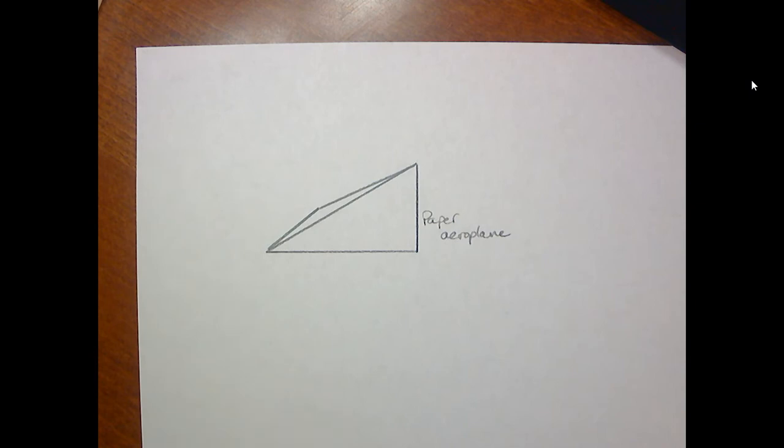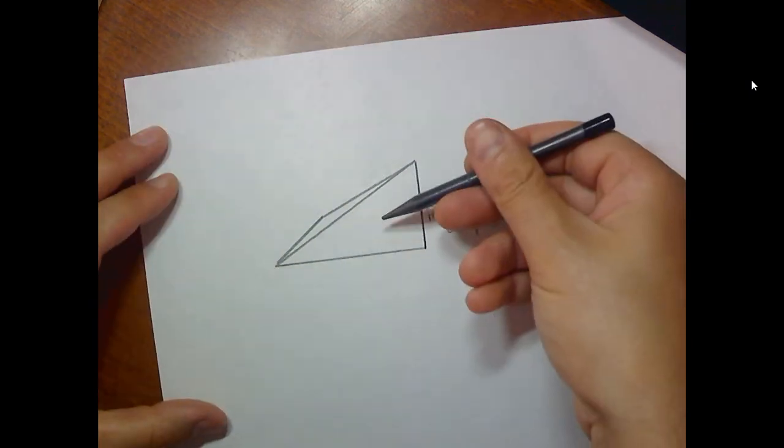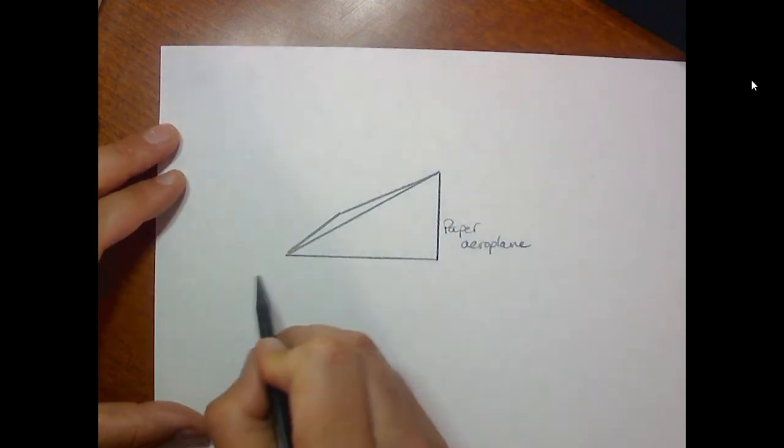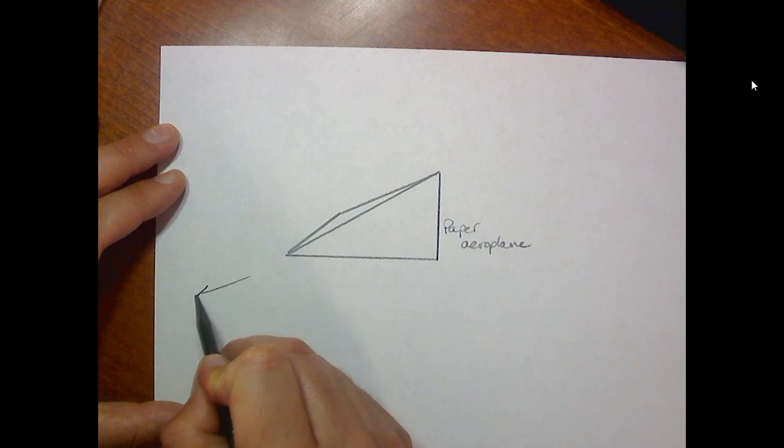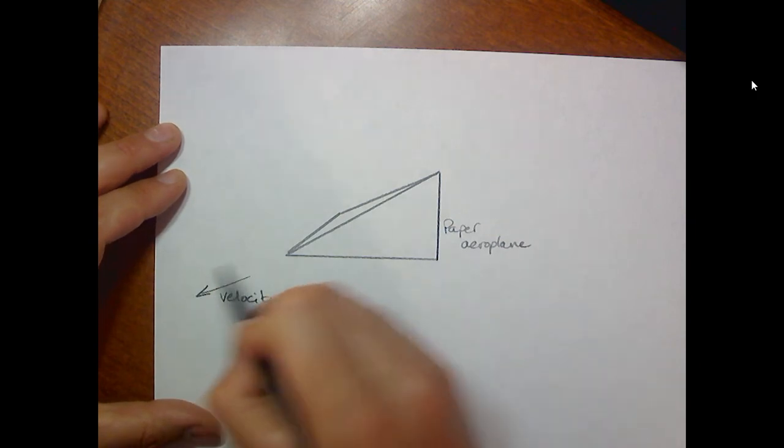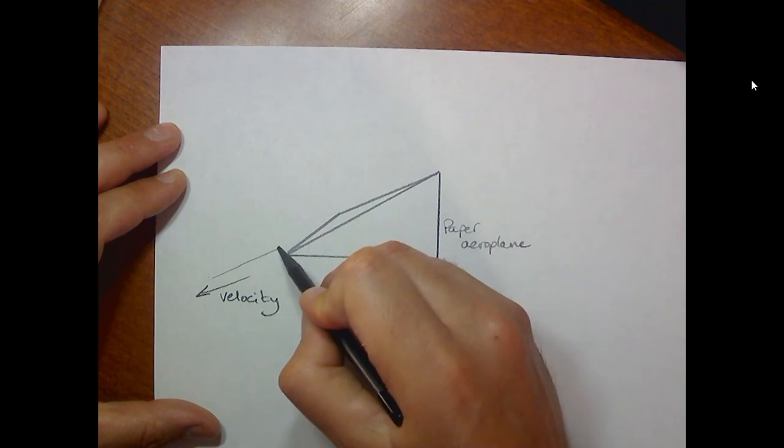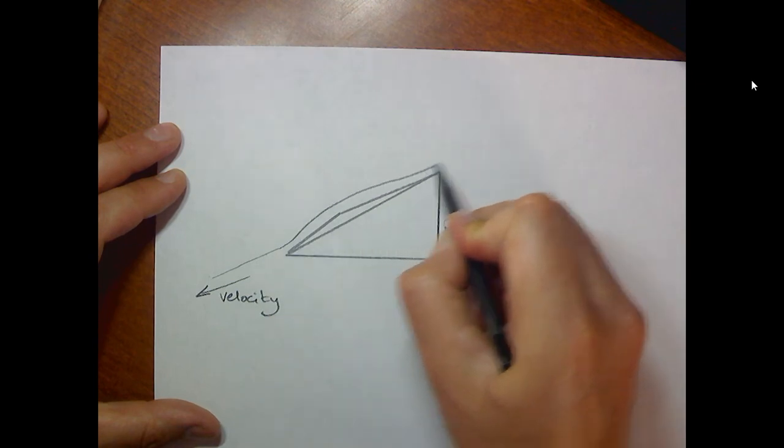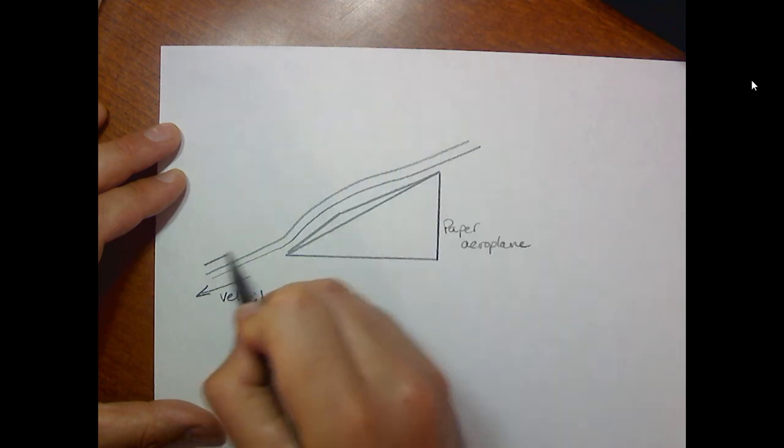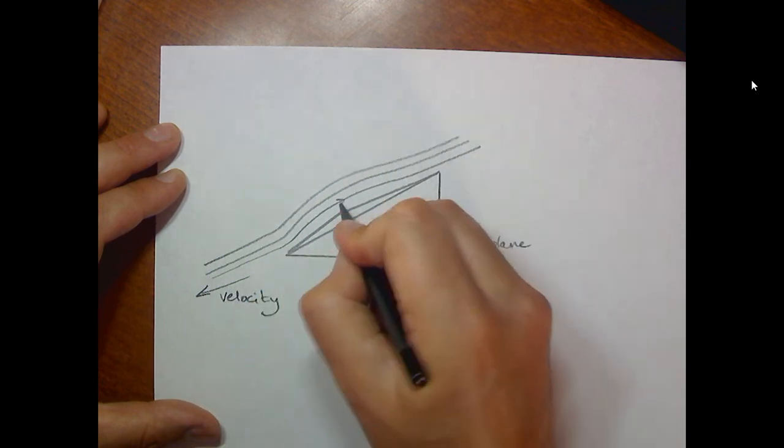We can basically think of it as doing a similar thing to the ball. The paper airplane is kind of going down and across at the same time, so it's kind of going down in this direction. We're going to draw that the plane has some velocity. This is a velocity arrow, not a force arrow. That's showing the direction of the plane moving.